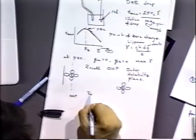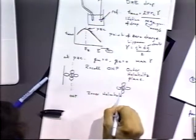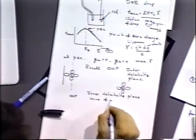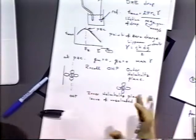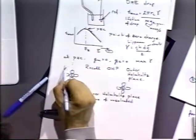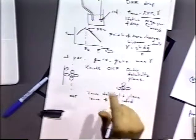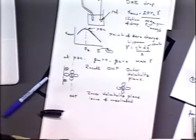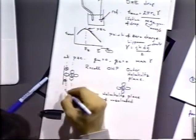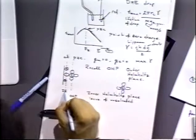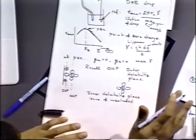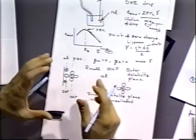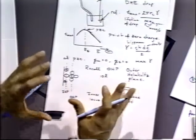Since there's an outer Helmholtz plane, that implies there's also an inner Helmholtz plane (IHP). That is the locus of unsolvated ions — ions that lack a solvation sheath and are stuck directly to the electrode surface. Often these are anions; chloride is an excellent example of an ion found on the inner Helmholtz plane. Under typical conditions, the OHP is about 10 angstroms away from the electrode surface, based on the solvation size of water and the ion itself.